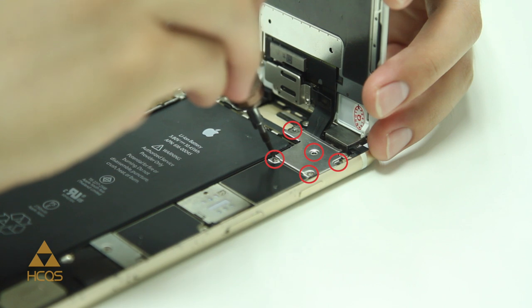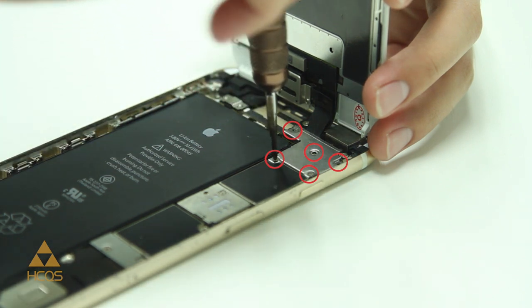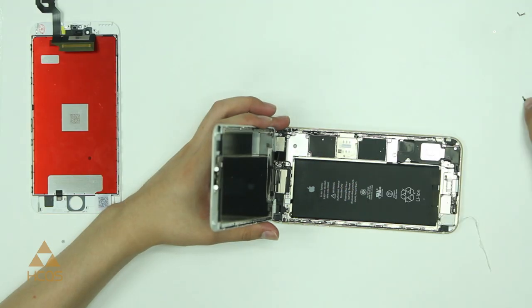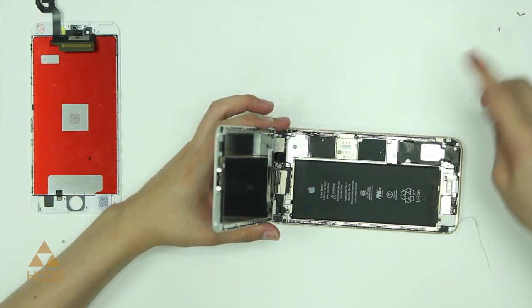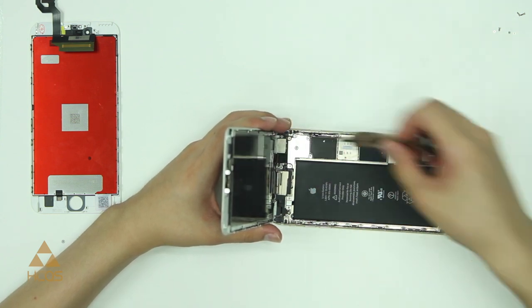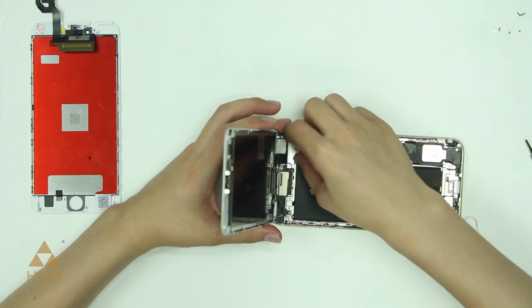There are five screws holding the retaining panel onto the back of where your display plugs in. These will need to be removed and they are all different sizes so make sure that you keep your screws organized. You do not want to put the wrong screw into the wrong hole. It can cause severe damage to your logic board.